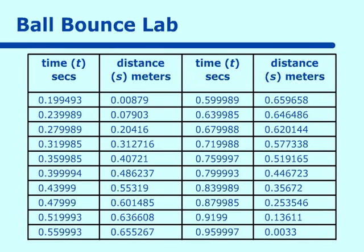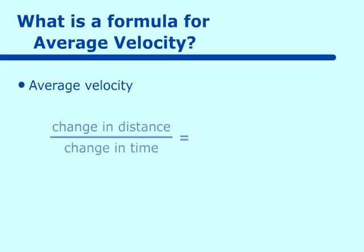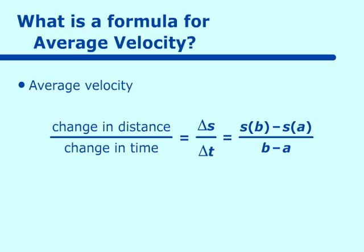Now, what we are going to find is average velocity over some different points here. Average velocity is the change in distance over the change in time — that is equal to ΔS over ΔT. You've seen this notation as ΔY over ΔX. And of course, that is equal to S(B), the ending point, minus S(A), the beginning point, over the interval of time B minus A. Now let's compute some of these average velocities.